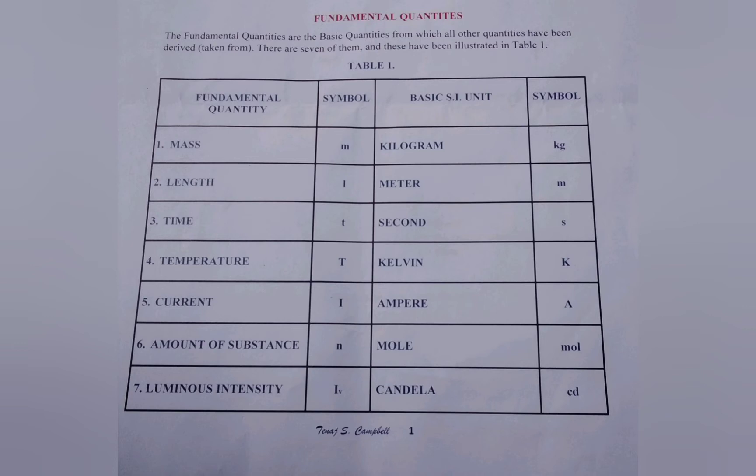Each quantity is denoted by its own symbol and each quantity also have a basic SI unit within which it is measured. The basic SI units themselves also have their own symbols.